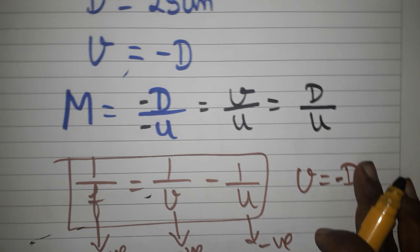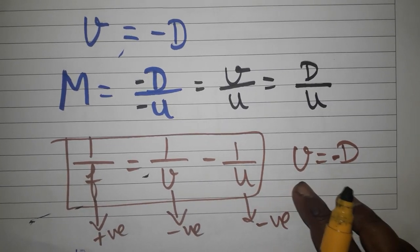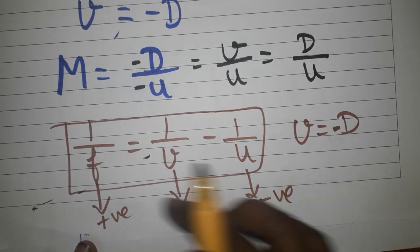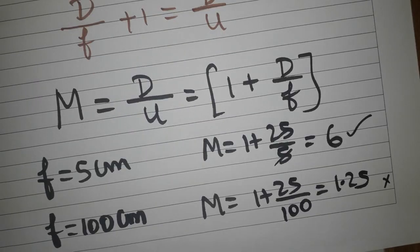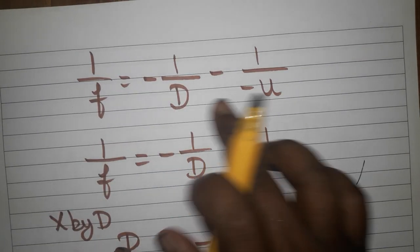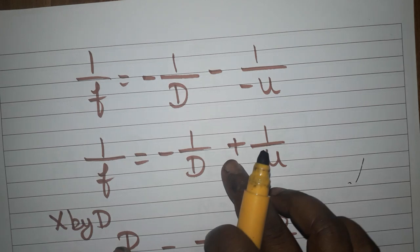This is the lens formula: v = -D, focal length is positive, v is negative, u is negative. If you substitute everything, you can get like this. Then you have to multiply with u. You will get like this. D is negative, u is negative. Negative and negative will become positive.